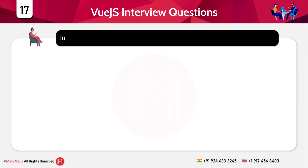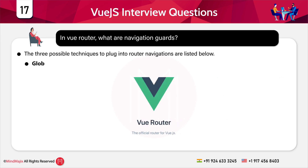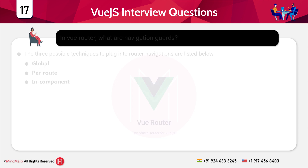The next question is: in Vue Router, what are navigation guards? Vue navigation guards protect navigations by diverting or cancelling them. The three possible techniques to plug into router navigations are global, per-route, and in-component.